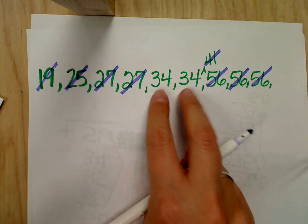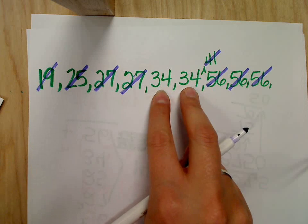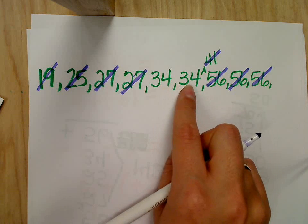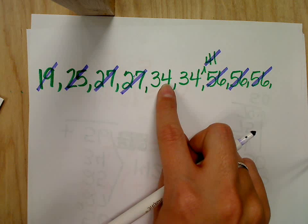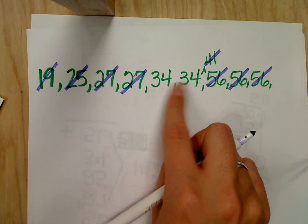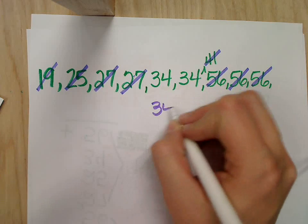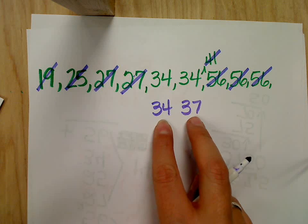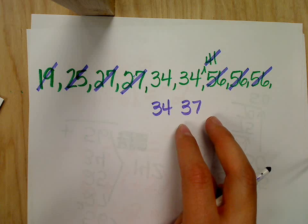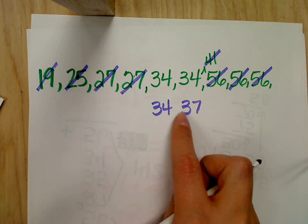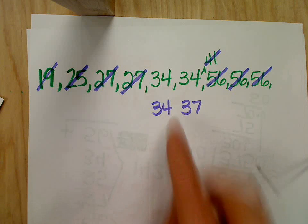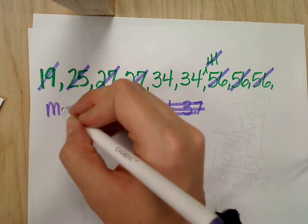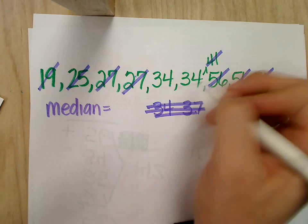So I'm going to add these up, and then I'm going to divide by two. Sixty-eight divided by two is thirty-four. So whenever you end up having the same number, it's the same thing. It's that number. Okay. But sometimes you'll have something like thirty-four and thirty-seven, and you need to find the exact middle of these two numbers, so you do have to add them and then divide. Okay. Because thirty-five and thirty-six are in between here. It's thirty-five point five. Good. Okay. So that's, what is that called? Median. Good. Median equals thirty-four.